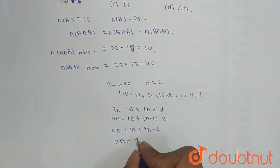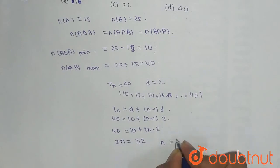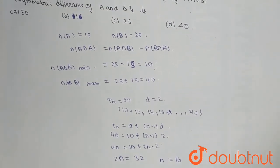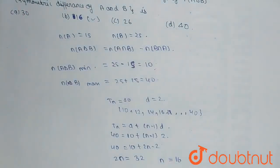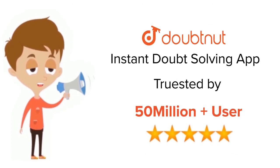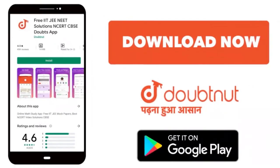2n is equal to 32, so n is equal to 16. So the answer of the given question is option B which is 16. Thank you friends, hope you like the video. For class 6 to 12, IIT-JEE and NEET level, trusted by more than 5 crore students, download Doubtnet app today.